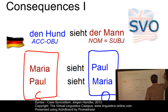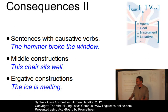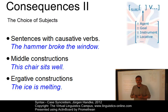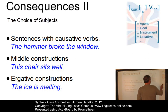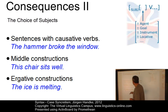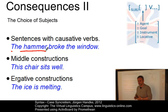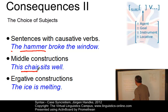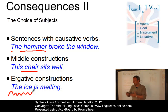A further consequence of case syncretism, already discussed in the e-lecture 'Subjects in Present-Day English', concerns the relative freedom of subject choice as a consequence of case syncretism. In English we have a large number of non-agentive subjects today — for example, non-agentive subjects occurring with causative verbs, in middle constructions, in constructions with obligatory adverbials, or in ergative constructions. All these subjects are non-agentive and they hardly occur in languages with an elaborate case system.